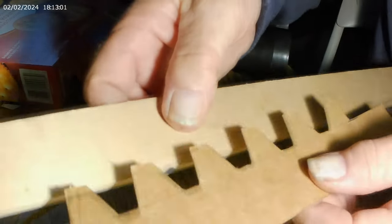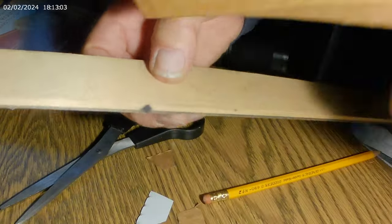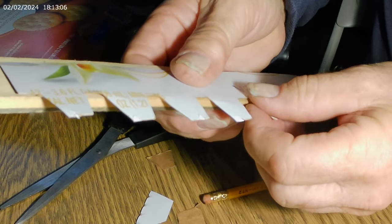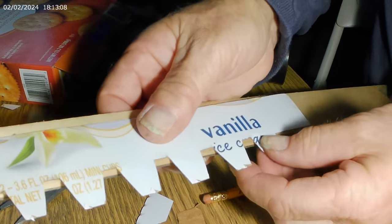Now for the other type of binocular, there's a slight variation. Most of it's the same as what we just did. You're going to cut out the cardboard to fit the size of the binocular.